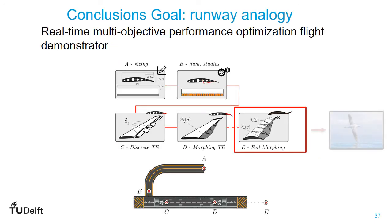To conclude, let's use the runway analogy. In our project, we have started with the sizing of the wing. Then we have performed numerical studies to arrive at the design constraints. Then we have developed a distributed discrete trailing edge overactuated concept to investigate the benefit of morphing design. Continuing, we have designed a fully distributed active trailing edge morphing concept with the SmartX Alpha. Our goal is to contribute to green aviation and develop a full leading and trailing edge morphing concept able to soar the skies like the sea bird we have seen earlier.